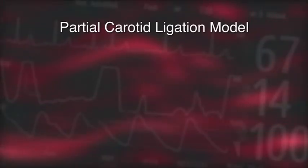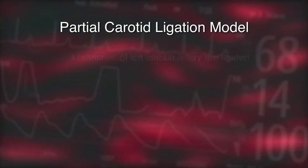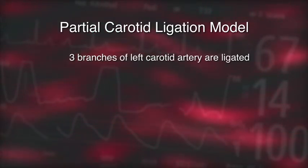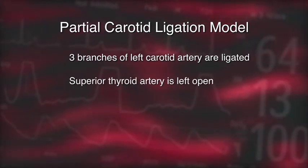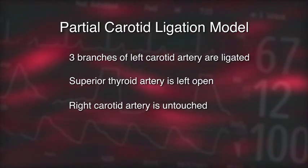To address this question, we developed a partial carotid ligation model in 2009 and showed that this can cause atherosclerosis. The model involves ligation of three downstream branches of the left carotid artery while leaving one branch — the superior thyroid artery — open. In the same animal model, the right side remains untouched and serves as a contralateral control.